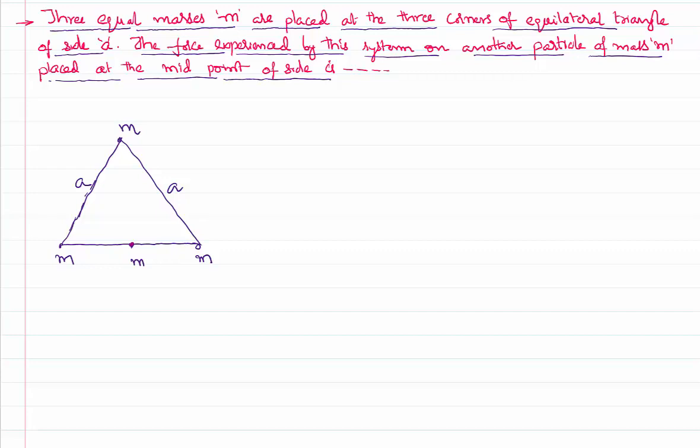Let us identify what are the forces acting on the fourth mass. Gravitational force is always attractive, you know. Therefore, on this mass, this mass applies a gravitational force F1. This mass also applies a gravitational force and tries to pull it towards it, F2. This mass also applies another gravitational force F3. So there are three forces acting.